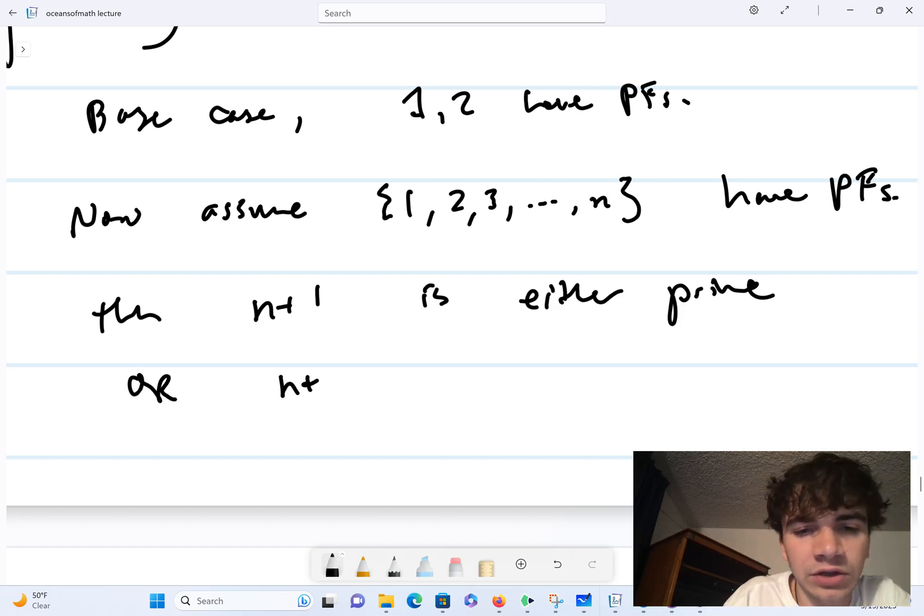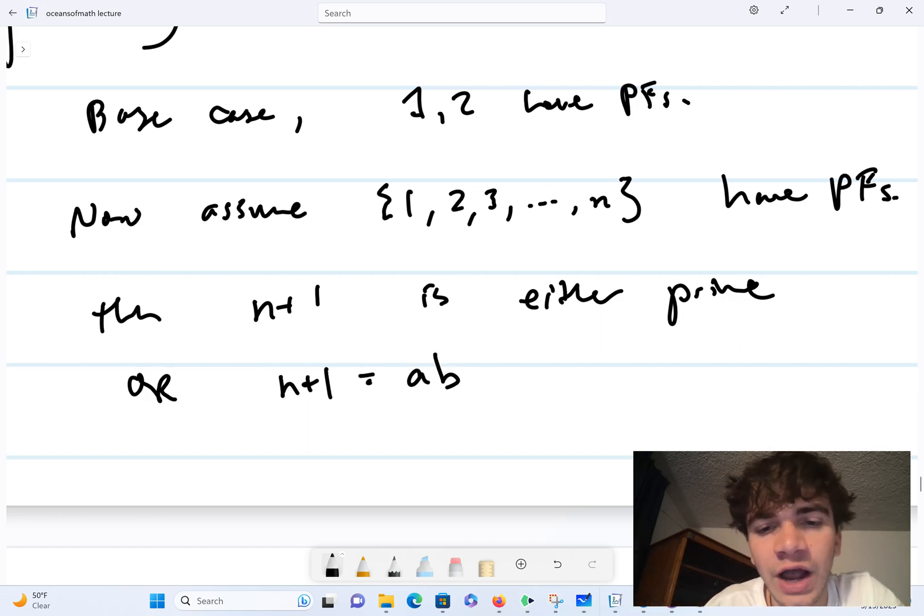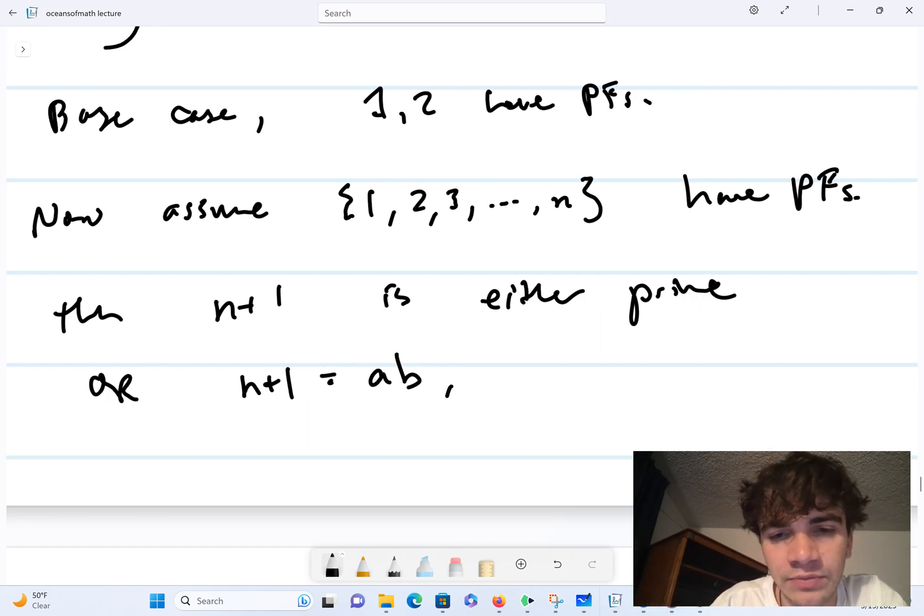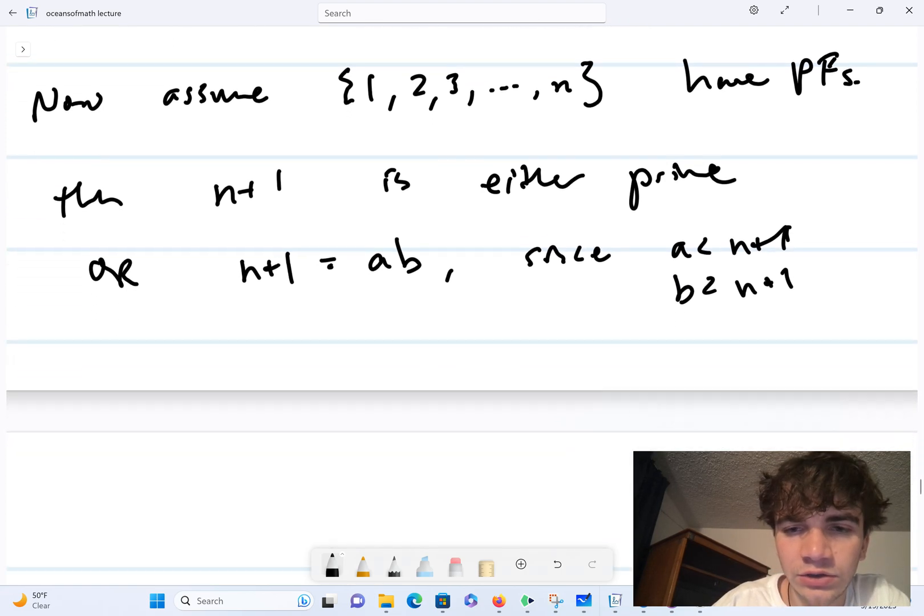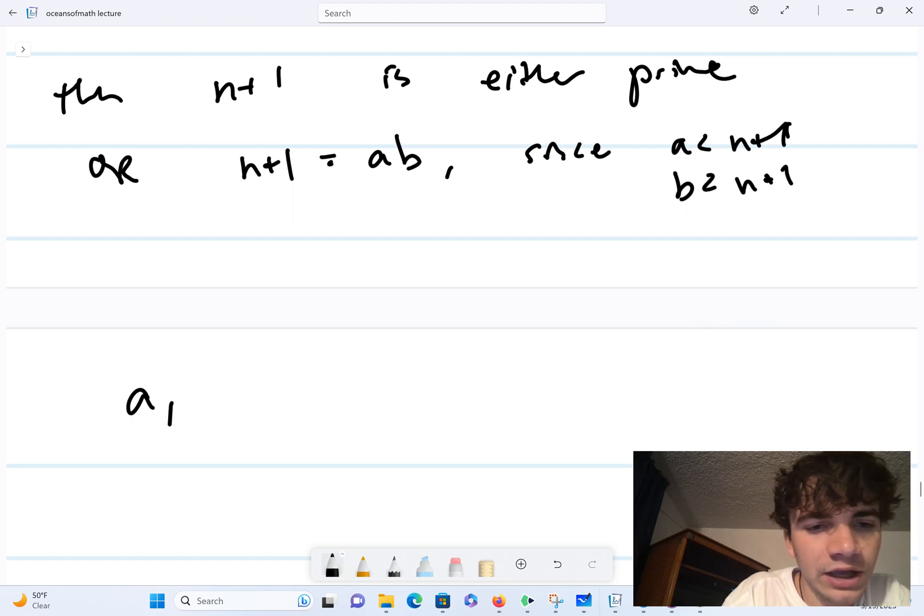Or n plus one is not prime, in which case it's equal to ab where a, b are non-trivial factors. And since a is less than n plus one and b is less than n plus one...